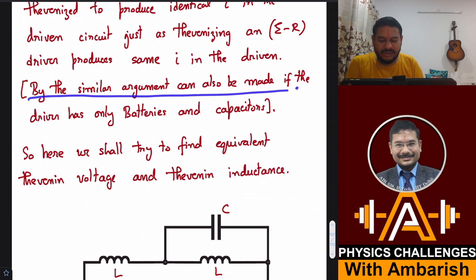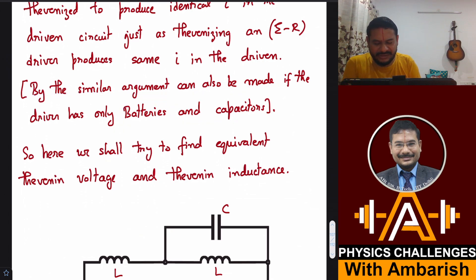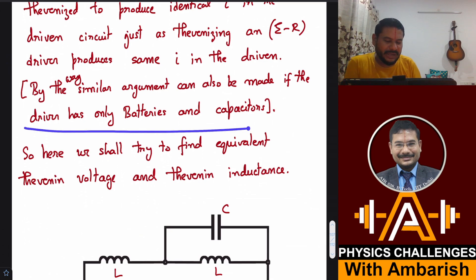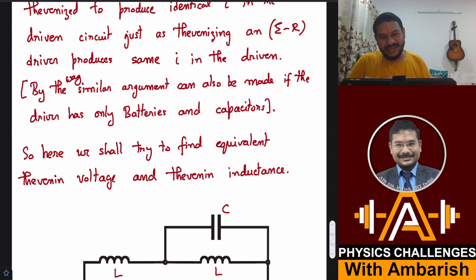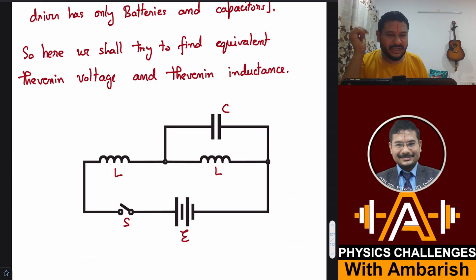By a similar argument, the same reasoning can be made if the driver has only batteries and capacitors — there we talk about Thevenin capacitance. I hope you followed the general logic of why we can Thevenize a circuit containing only batteries and inductors as the driver. I'll give the link to the proof video in the description box.